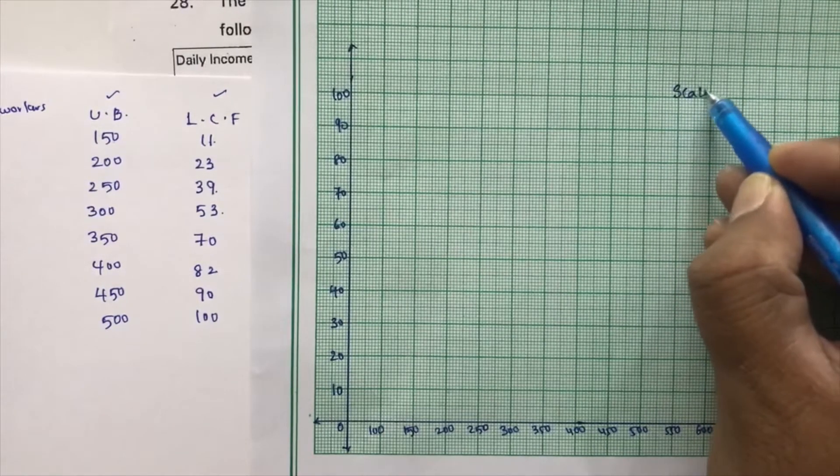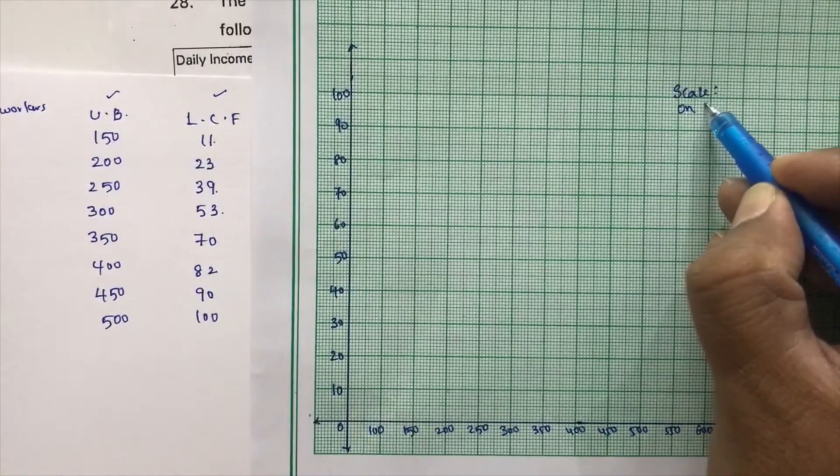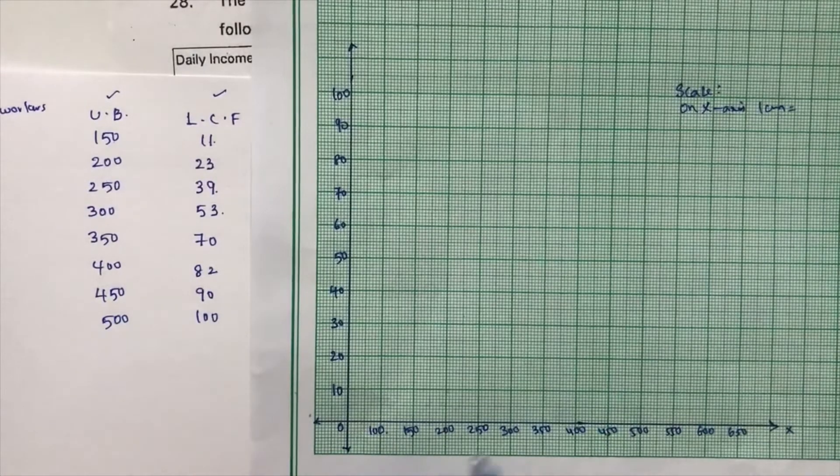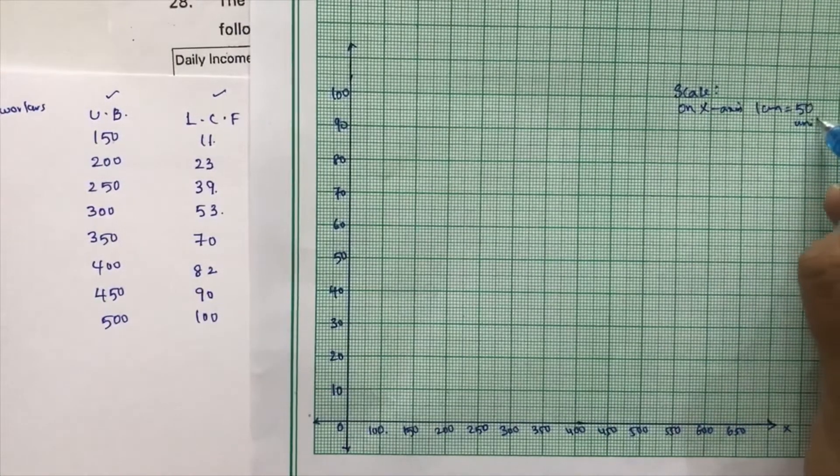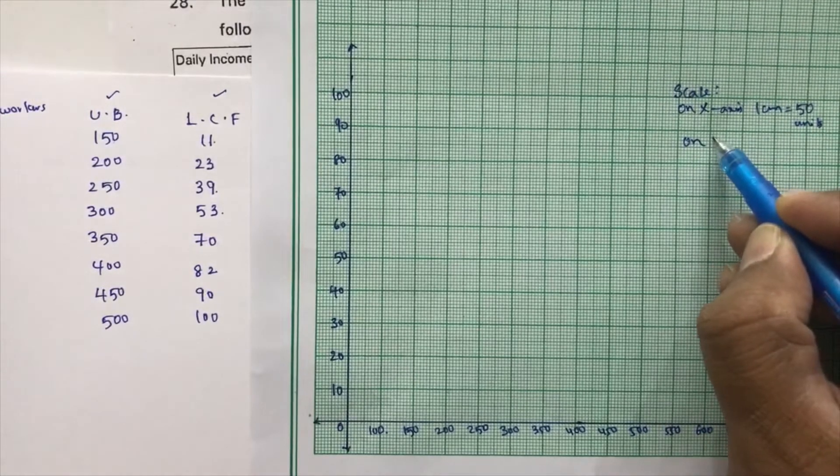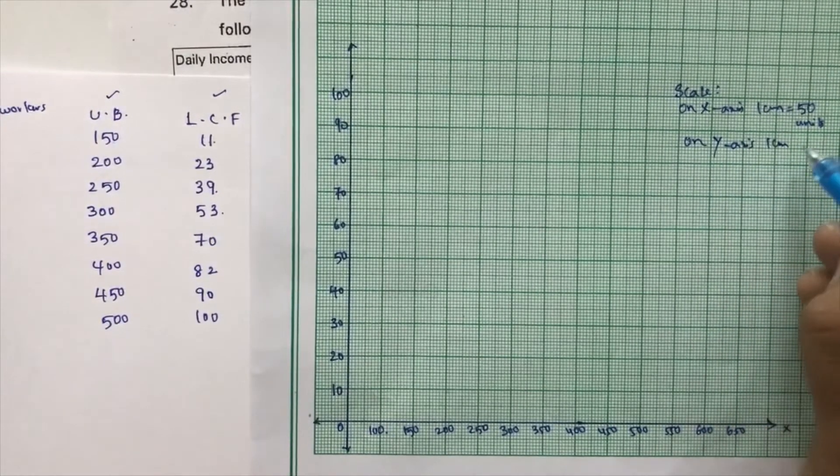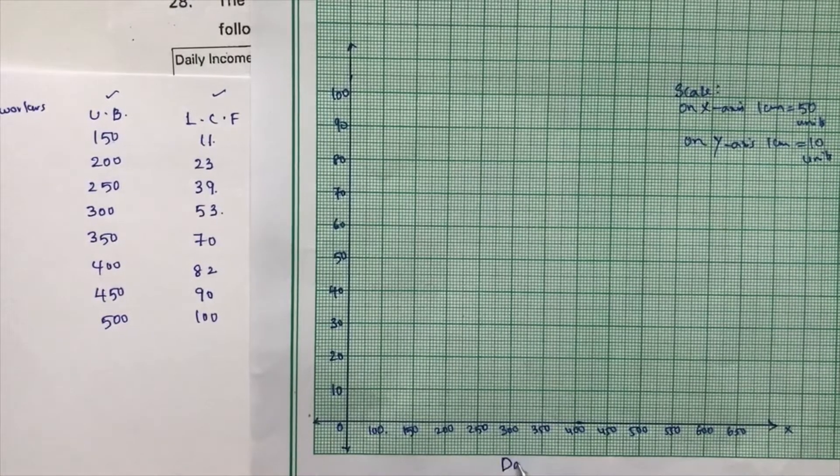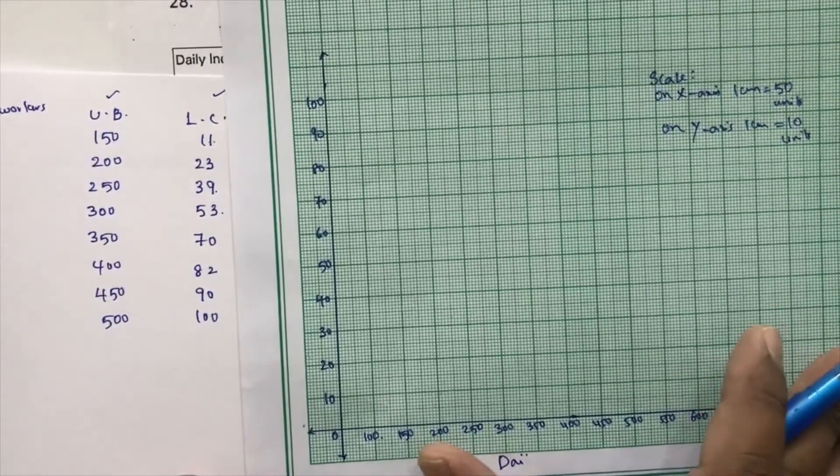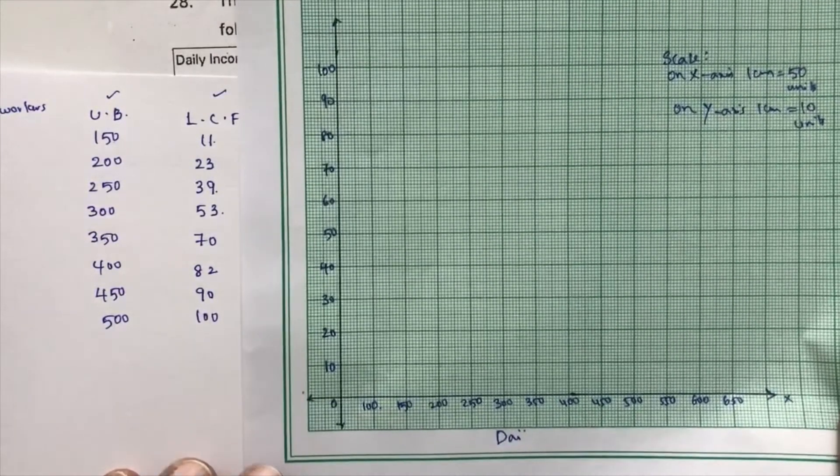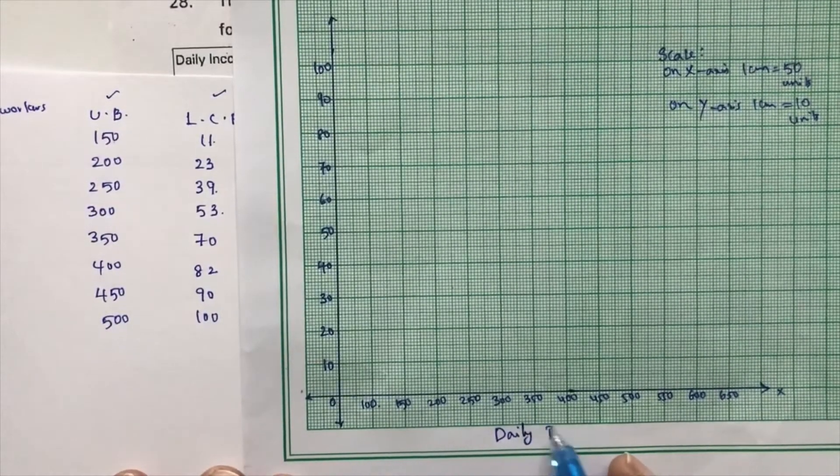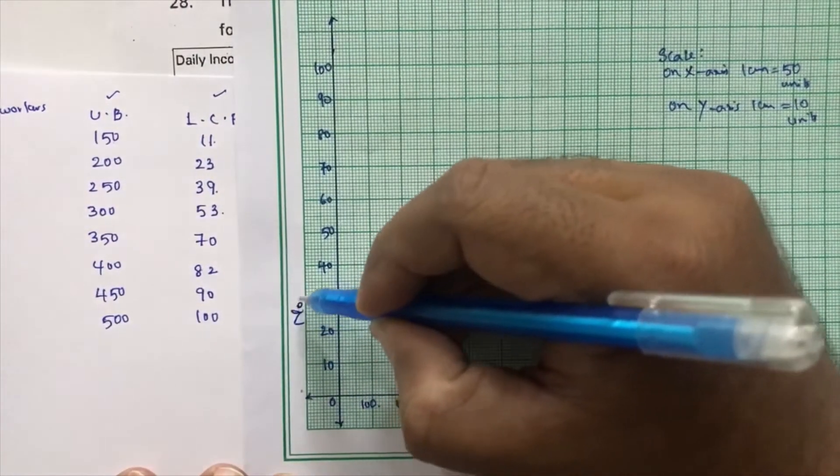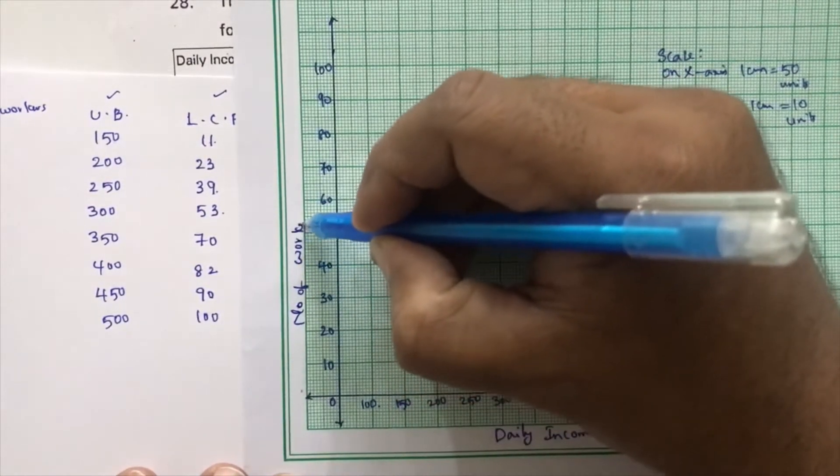Scale is here. On x-axis, 1 centimeter equals, see, gap is like 50, so 1 centimeter equals 50 units. And on y-axis, 1 centimeter equals 10 units. And see, on x-axis, I took daily income, which is in rupees. It's daily income in rupees. And on y-axis, number of workers.